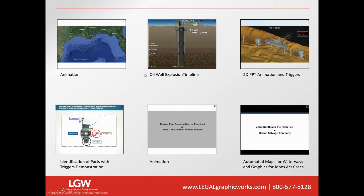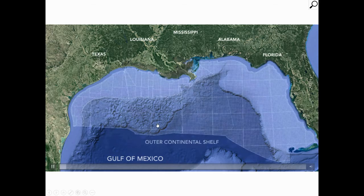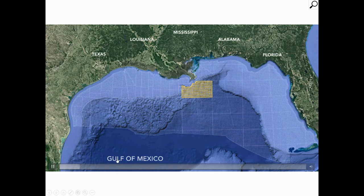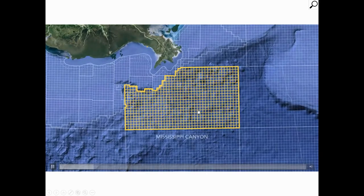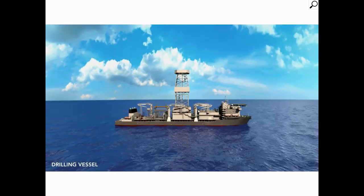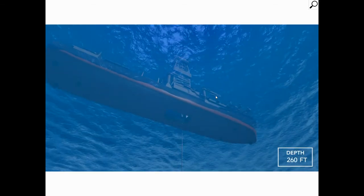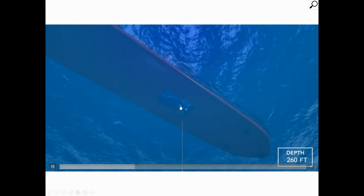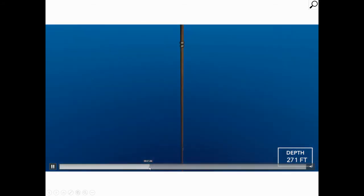The first one I wanted to walk you through was one of our animations. We use this to illustrate the complexity associated with plugging and abandoning a well. We start with an overhead bird's eye view of what it looked like in the Gulf and where exactly this well was located. We zoom in to a really beautiful image of the vessel, and then we show the depth and complexity of how far we're going down to perform this task.